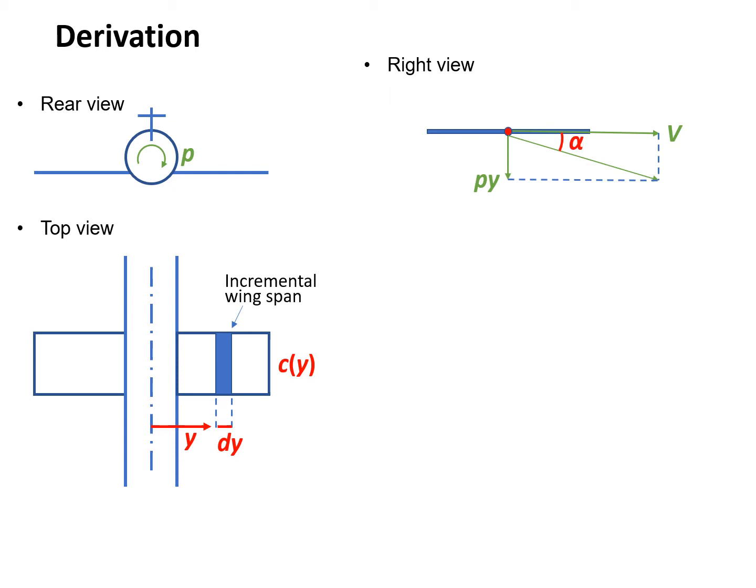Combining the horizontal and vertical velocities, we have the actual total velocity pointing downward, and we have an induced angle of attack. In that triangle, tangent alpha equals py divided by V. Using the small angle assumption, alpha equals py divided by V. Remember, the unit for alpha is radians instead of degrees. This is very useful and we will use it many times later on.